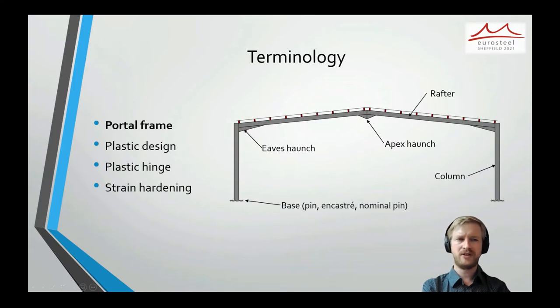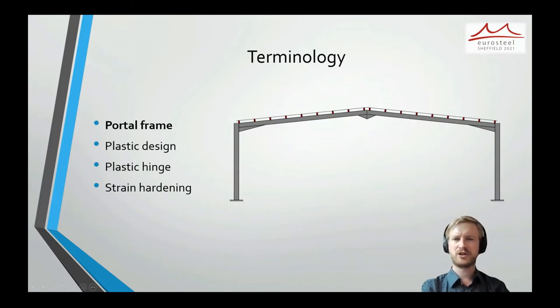So haunches can be added at the eaves and the apex, and in the UK they're typically an off-cut of the rafter. This allows for deeper bolt groups to help transmit the moment around the frame, as well as increasing the moment capacity in the areas of maximum moment. It also serves to reduce the flexibility and hence the deflections.